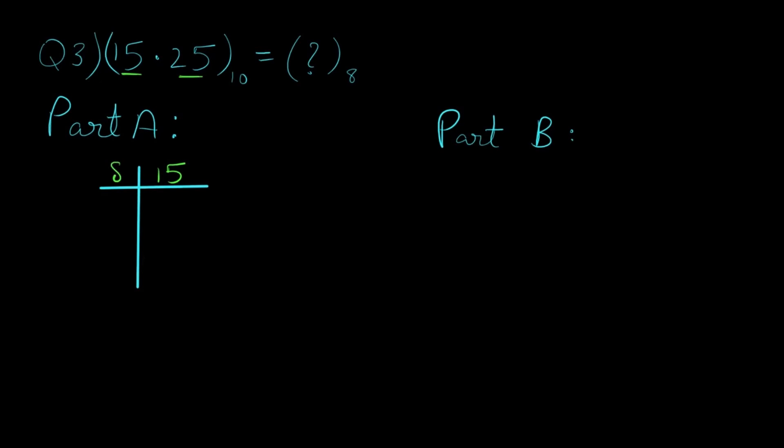So for part A, as we did in question number 1, we divide the number 15 with 8 repetitively till we get the quotient as 0. So we know 8 ones are 8 which will give us a remainder of 7. We know 8 zeros are 0 which will again give us the remainder of 1. Now since we reached 0 we stop this process and we have got our answer which is in descending order.